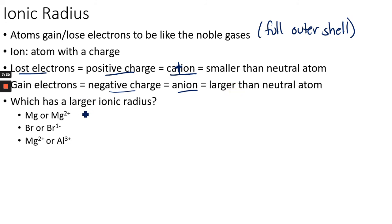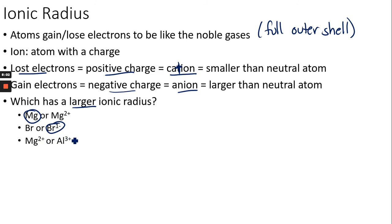Which has a larger radius — magnesium or magnesium 2+? The positive two means electrons were lost, so magnesium (neutral) is larger because losing electrons shrinks the atom. Bromine or bromine 1−? The negative charge means an electron was gained, making it harder for the nucleus to pull electrons closer, so Br⁻ is larger. Magnesium 2+ or aluminum 3+? The more electrons lost, the smaller the atom, so magnesium 2+ is larger because it hasn't lost as many electrons.